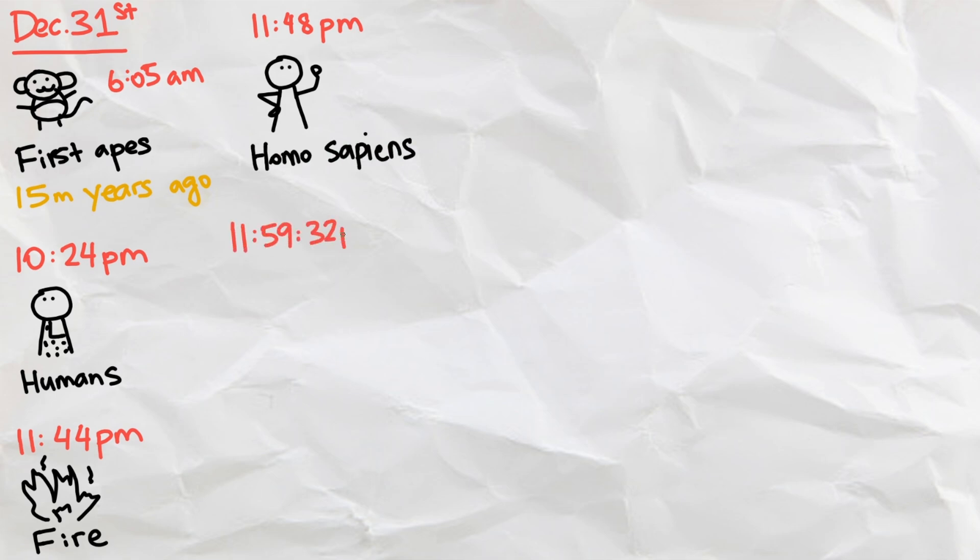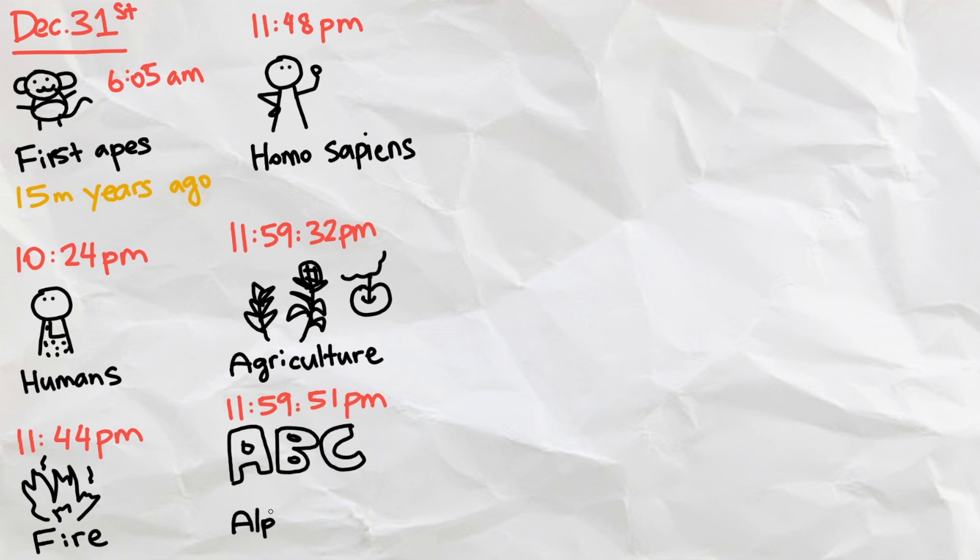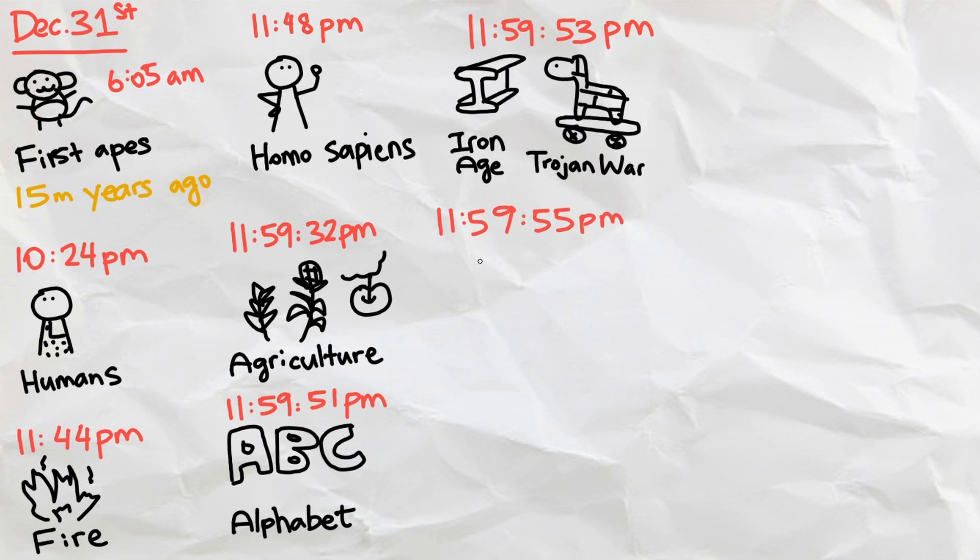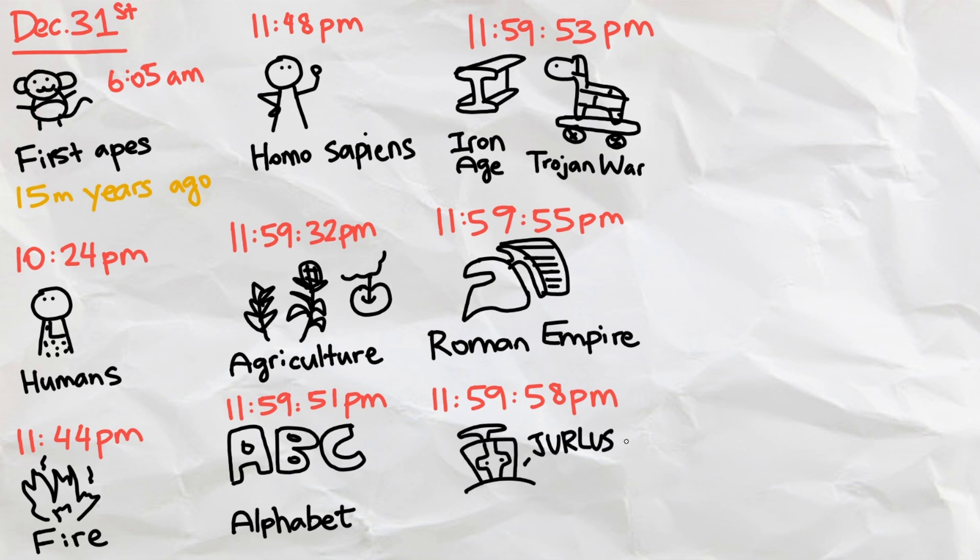This leads to the very last second on the cosmic calendar, with the invention of agriculture at 11:59:32 PM, the invention of the alphabet at 11:59:51 PM, the Iron Age and Trojan War at 11:59:53 PM, the Roman Empire at 11:59:55 PM, the Crusades during the Middle Ages at 11:59:58 PM, and the Renaissance at 11:59:59 PM.